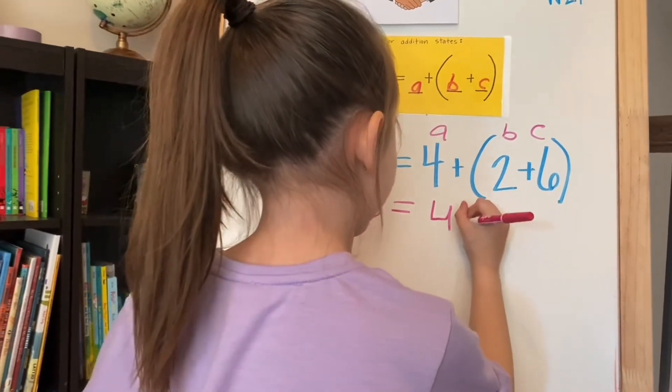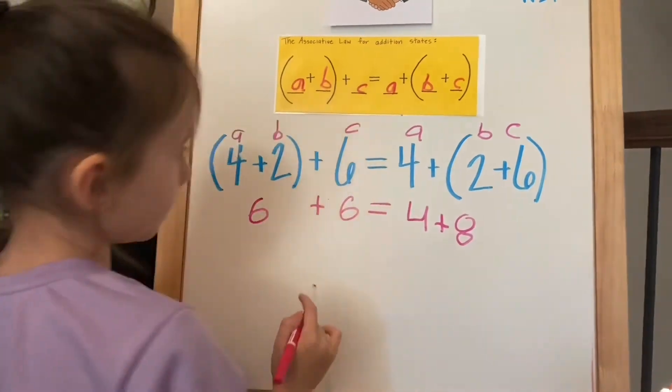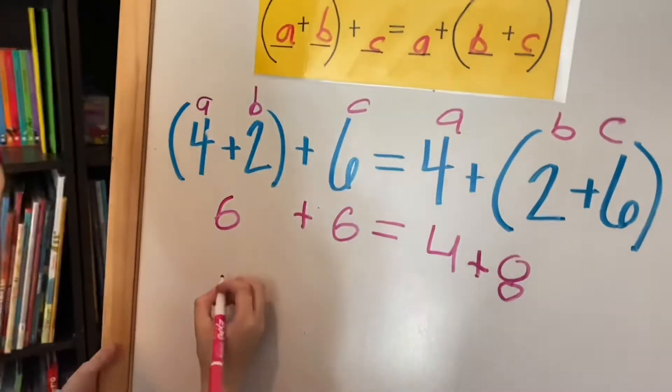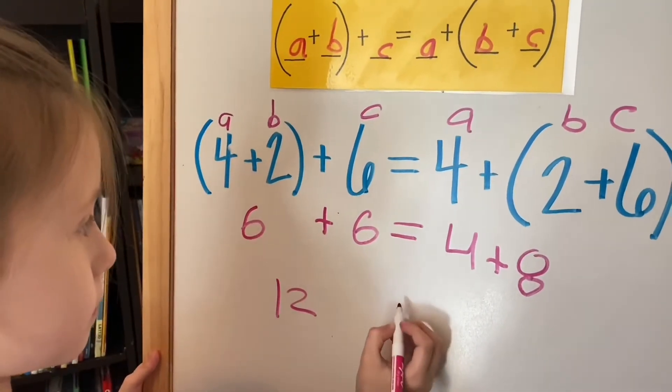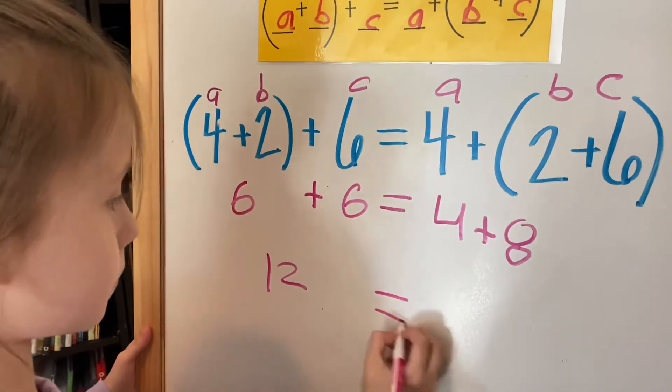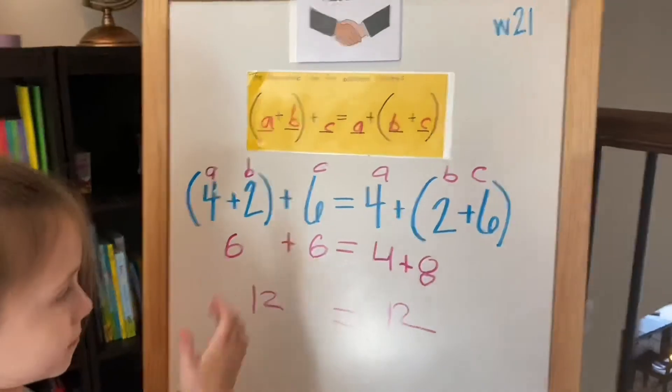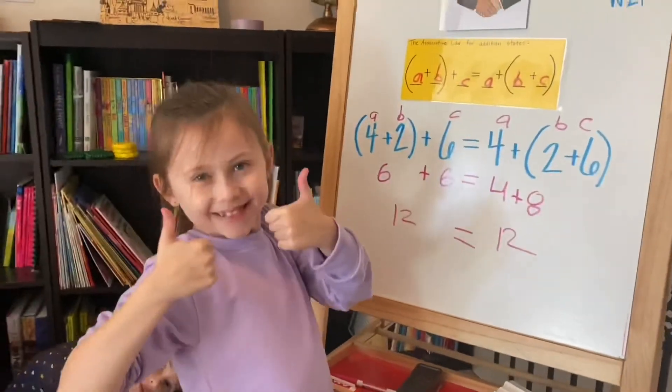Now what is 2 plus 6? There you go. Now we have 6 plus 6. What does that equal? That's right. Bring that equal sign down. What is 4 plus 8? Look at that, it checked out. That gives us two thumbs up.